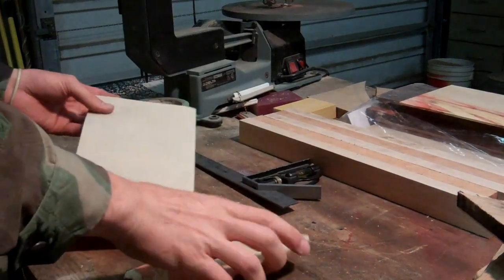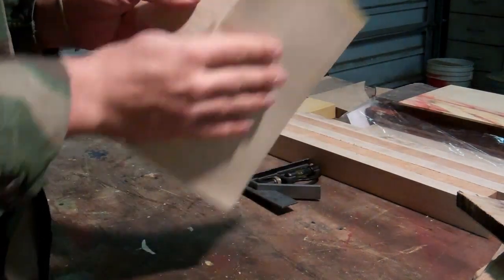Now I'm going to use this 400 grit sandpaper and just soften up all the edges.